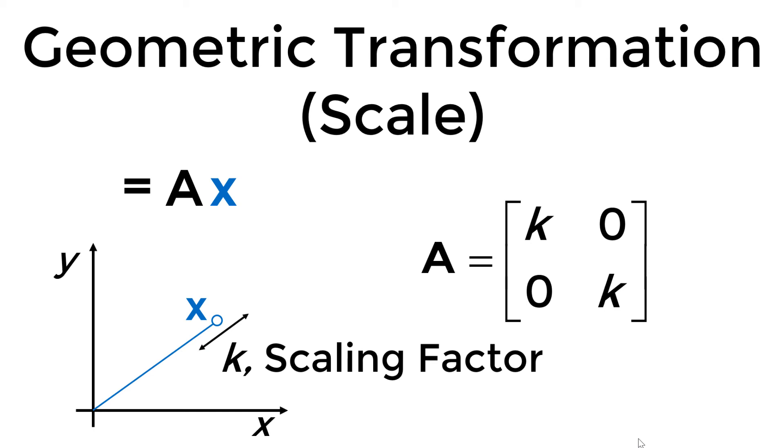Once you multiply matrix A by column vector x, you get the x prime, which represents a scaled image.